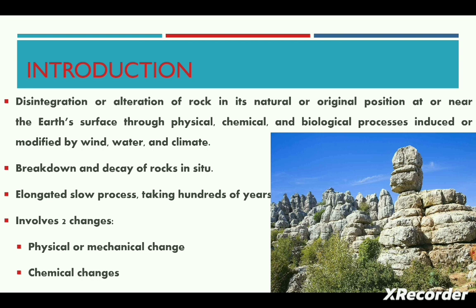Weathering is a long process that takes hundreds of years to happen. Generally, weathering involves two types of changes in the rock. The first is the physical or mechanical change, where rocks are disintegrated through change in temperature, frost action, or biological or wind action. The second type of change is through chemical change, where rocks are decomposed either through static water or with the help of oxygen or carbon dioxide.